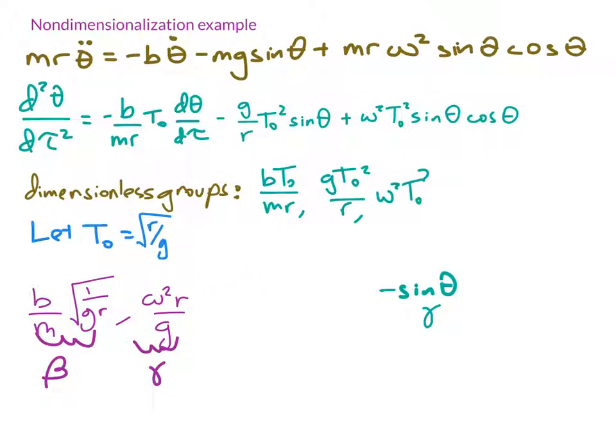Rewriting the equation, using prime for our derivatives because they're with respect to our nondimensional time variable tau, rather than being with respect to t, I have θ'' = -βθ' - sin θ + γ sin θ cos θ.